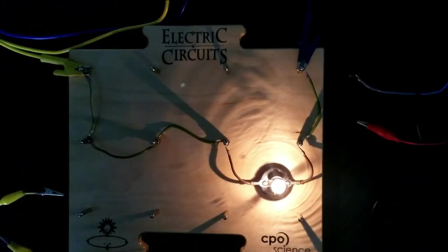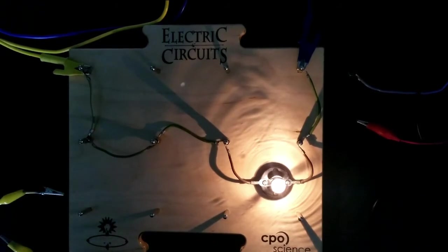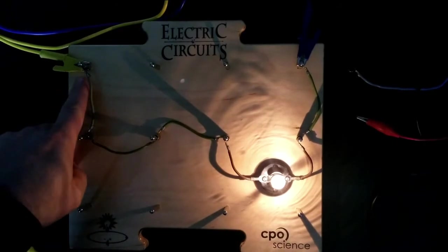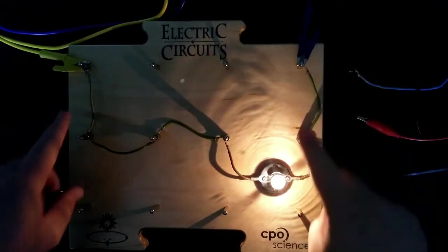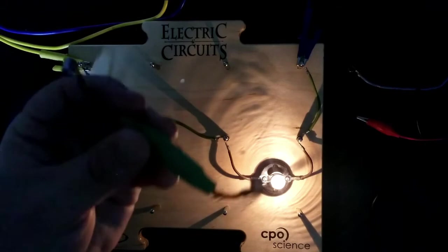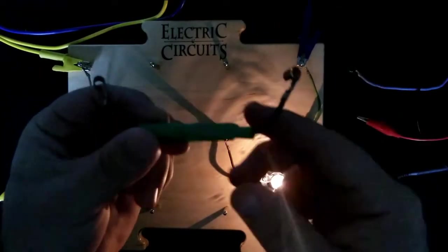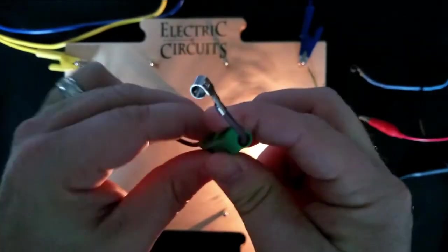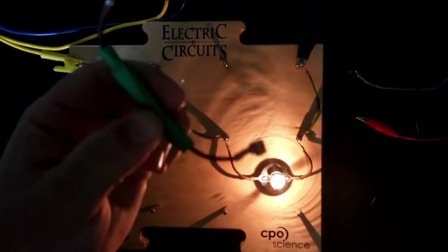The other way that I can affect the current is by changing what the circuit is actually made of, what the charges have to go through in order to go from one end of the battery to the other. So I'm going to introduce a resistor. And these are the resistors we use in class. They're nice, big, rubber-coated resistors.